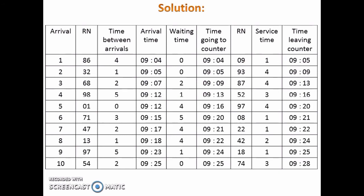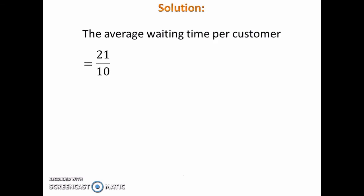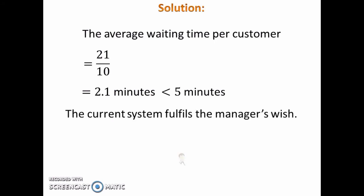Continue the simulation until person number 10. Calculate the average waiting time per customer by adding the numbers in the waiting time column and dividing by 10. The average waiting time per customer is 2.1 minutes. 2.1 minutes is less than 5 minutes, therefore the current system fulfills the manager's wish.